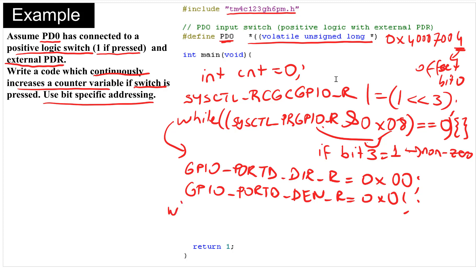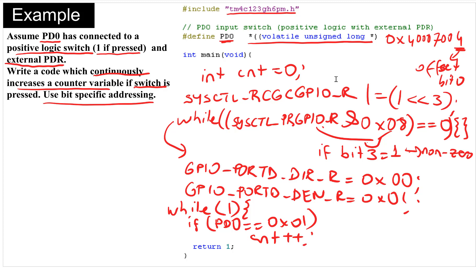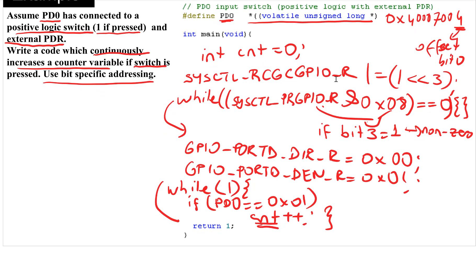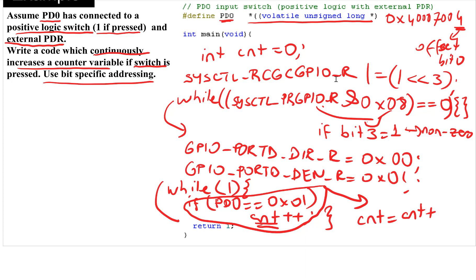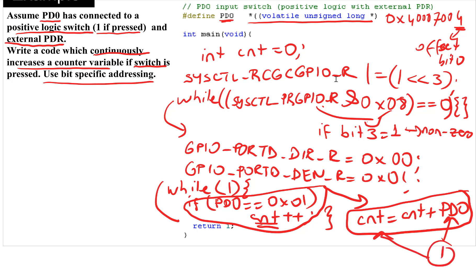Now we continuously read the switch using a while(1) loop. We can say if PD0 equals hex 0x01, then increment the counter. This continuously reads the switch and whenever it is 1, it increases the counter. Alternatively, instead of the if statement, we can write cnt = cnt + PD0 directly, so whenever the switch is 1 we add it to the counter without needing the if condition.